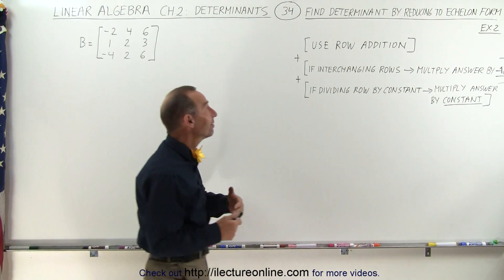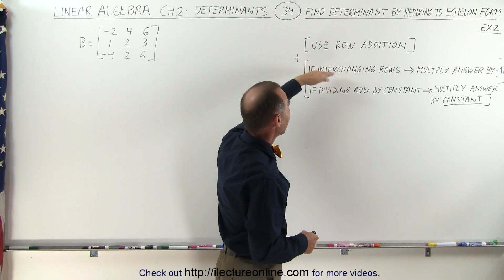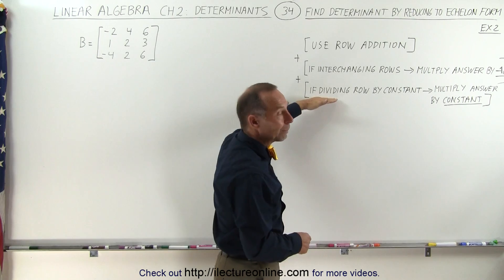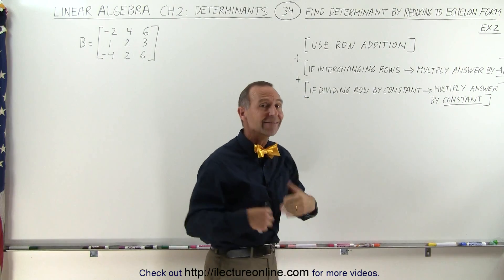We're going to use all three steps: row addition, interchanging rows, and multiplying or dividing a row by a constant as necessary.